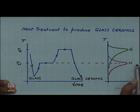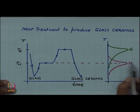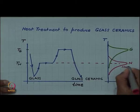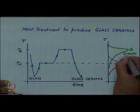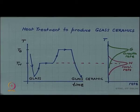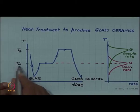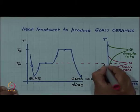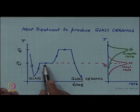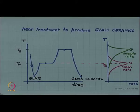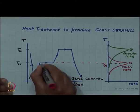Recall that the growth rate and nucleation rate as a function of temperature show a maxima. Here N is the nucleation rate and N_g is the growth rate. At temperature T_N, the nucleation rate is maximum, and several crystal nuclei form during this nucleation stage.